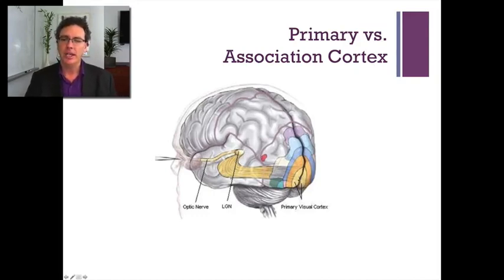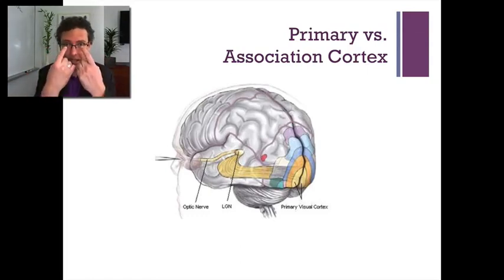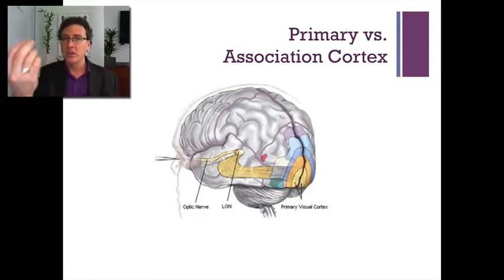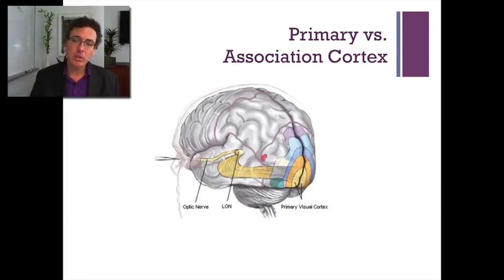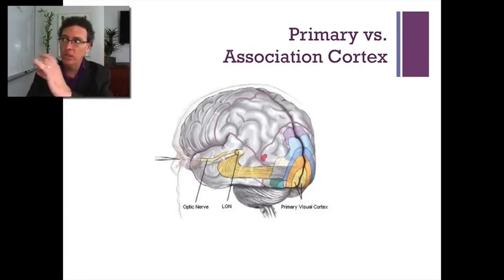The primary visual cortex is getting the raw input from the world — literally the information from the eyes is going right here. If you had damage to this area, what you would feel phenomenologically is like a black spot — almost like if you took my glasses and stuck a sticker on them so that visual information just wasn't getting in. That's what it would feel like if some of your neural tissue here was damaged. You would have what we call a scotoma, literally a kind of black spot that followed your vision anywhere you looked.